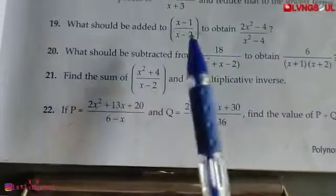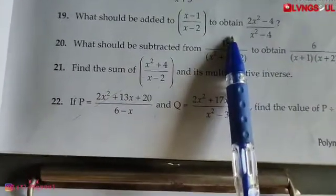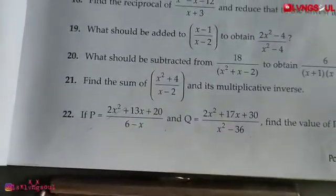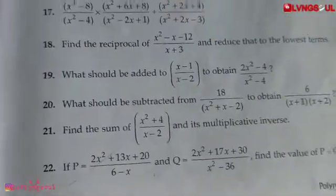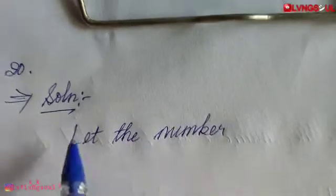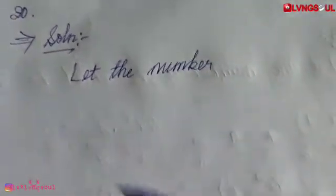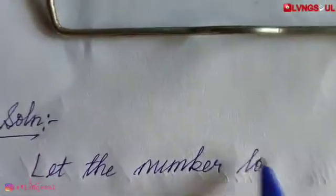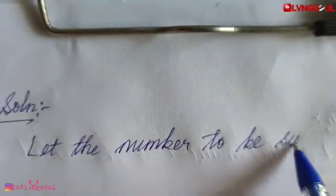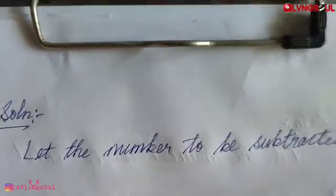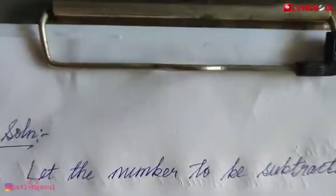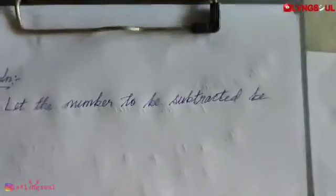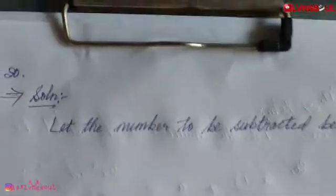For example, what should be subtracted from 7 to get 2? Five — because 7 minus 5 equals 2. Similarly here, let the number to be subtracted be A, or let the number to be subtracted be U.